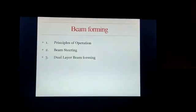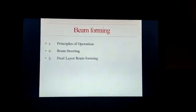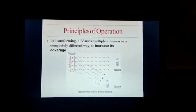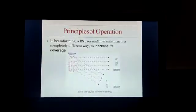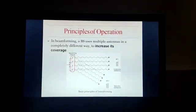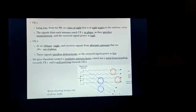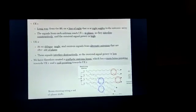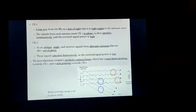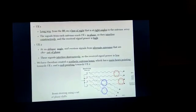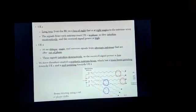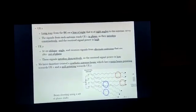Beamforming consists of three topics: principle of operation, beam steering, and dual-layer beamforming. In beamforming, the base station uses multiple antennas in a completely different way to increase its coverage. The diagram shows two user equipment: UE1 is far from the base station on a line of sight at right angles to the antenna array, so the signals interfere constructively and the received signal power is high. UE2 is at an oblique angle and receives signals from alternate antennas that are 180 degrees out of phase, so they interfere destructively and the received signal power is very low.